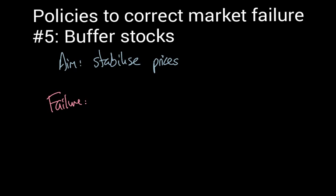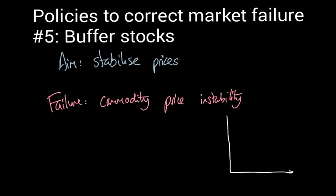The failure that we are working to try and eliminate here is instability in the prices of commodities. Commodities tend to have relatively volatile prices on world markets. By commodities, we mean things like food primarily, but also things like oil and iron. The reason they tend to have quite volatile prices is that we normally think of them as having relatively inelastic demand and supply.